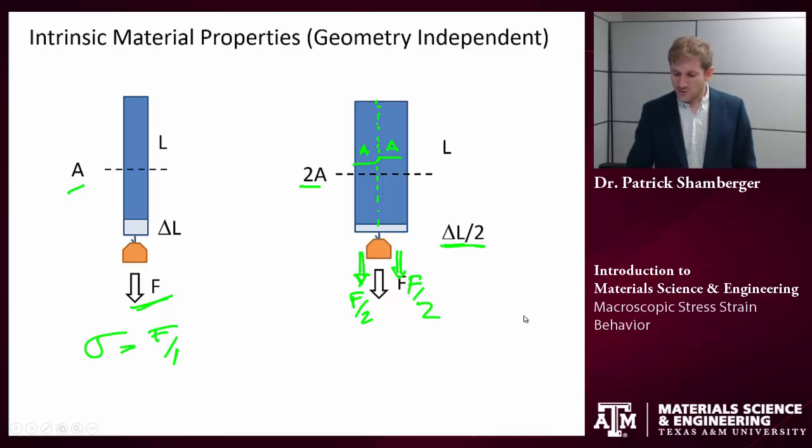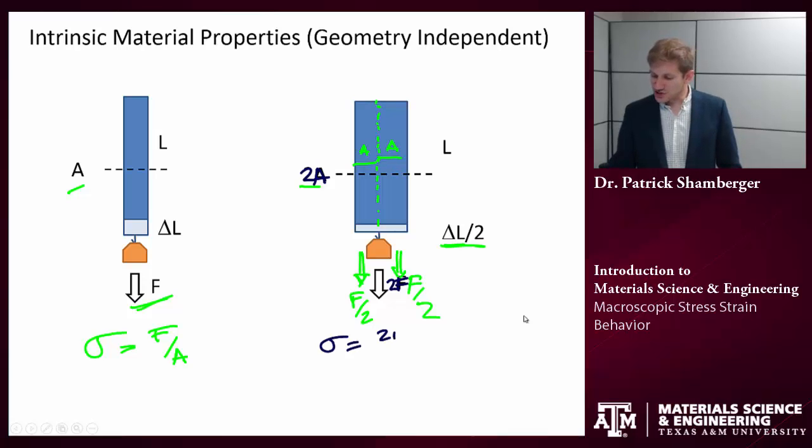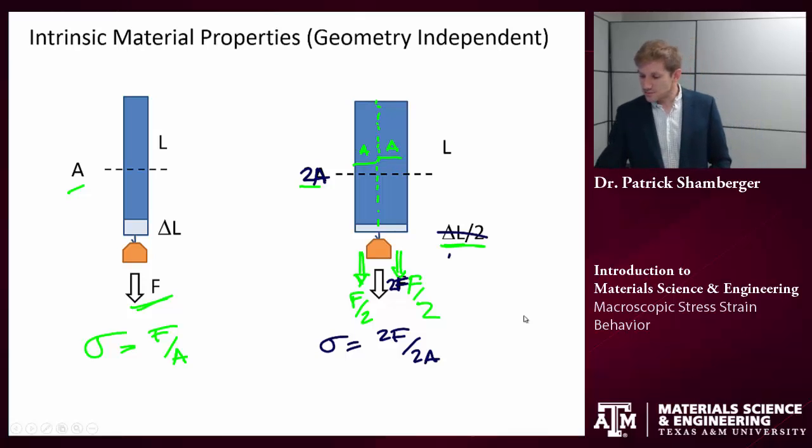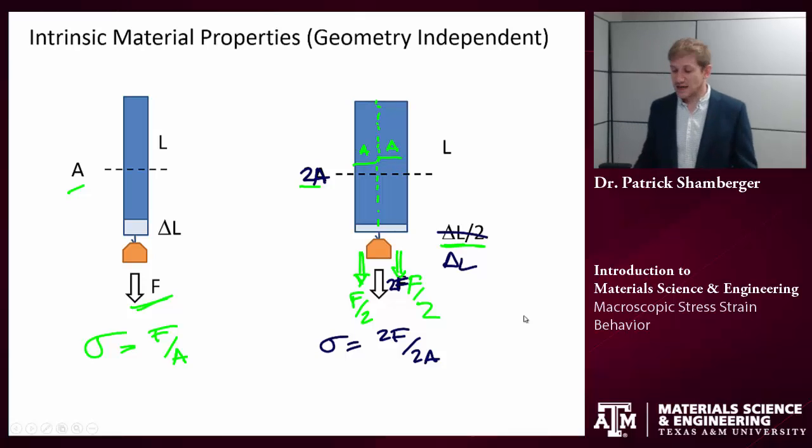Stress equals F over A. If I had twice the force over twice the area, my stress now equals 2F over 2A, and I would have the same stress. In that case, my elongation would be the same amount.